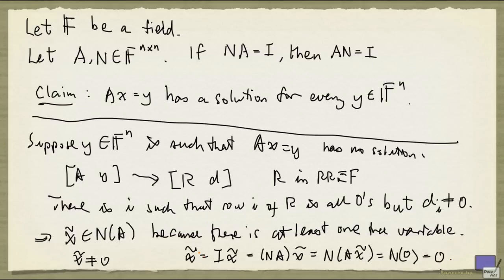And this contradicts that x tilde is non-zero. So the assumption that there exists some y such that Ax' equal to y has no solution must be false, and that proves the claim.